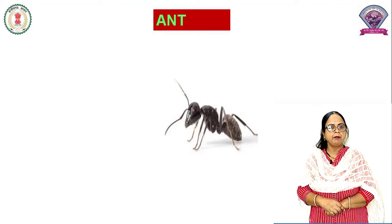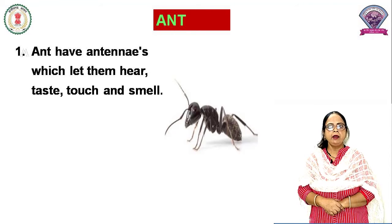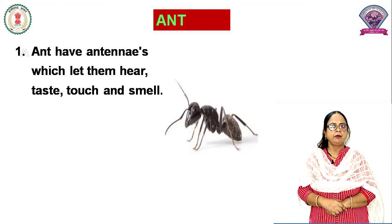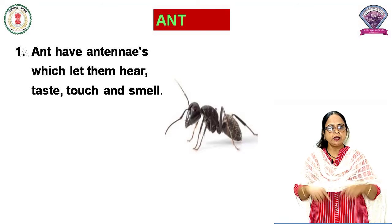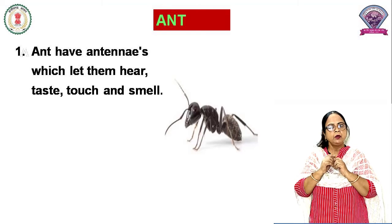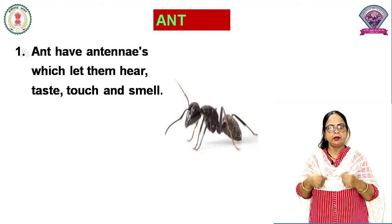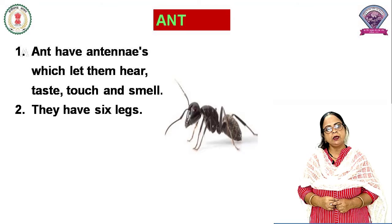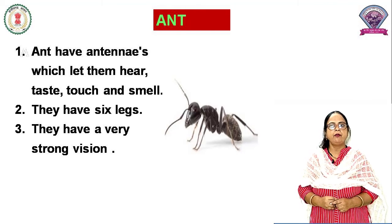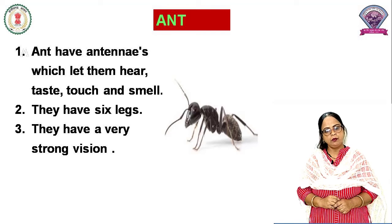Next is Ant. Ant to aapne charon taraf dekha hoga. Ant means cheeti. Ants have antennas which let them hear, taste, touch and smell. Jo cheeti ke antenna hote hain, unke dwara wo sunne, swaad lene aur chhune ka kaam karti hai. They have six legs. Uski chhe taangein ya pair hote hain. They have very strong vision. Uski dekhne ki shamta bahut tez hoti hai.